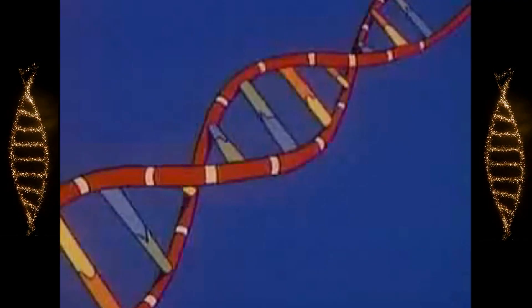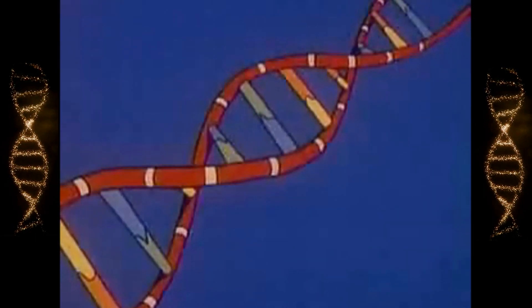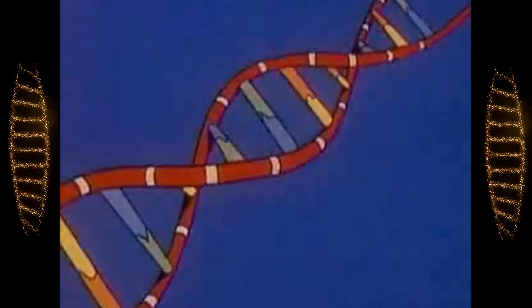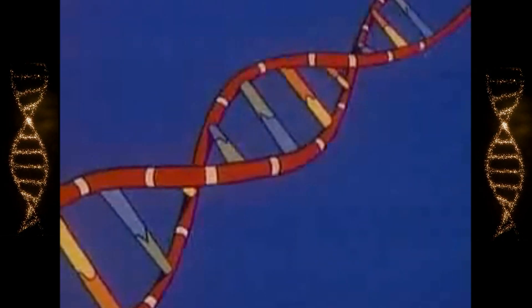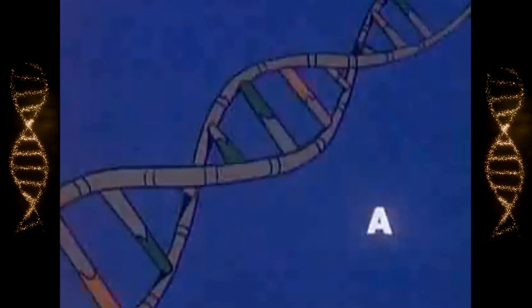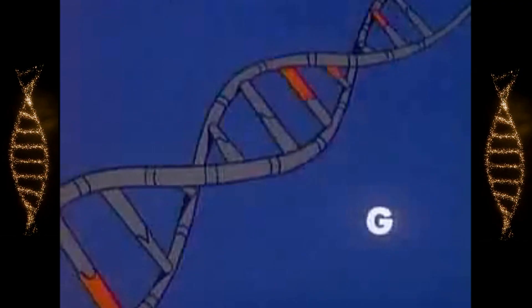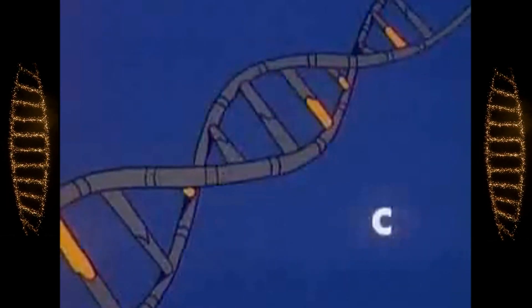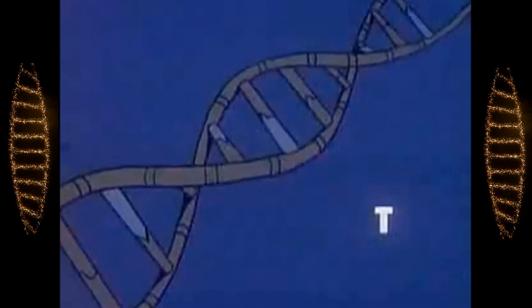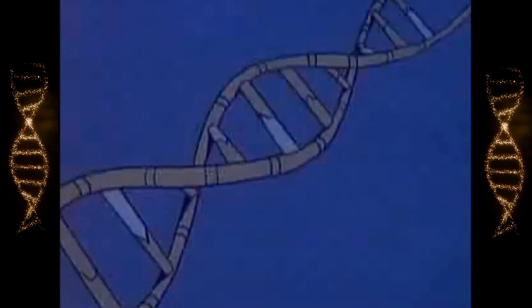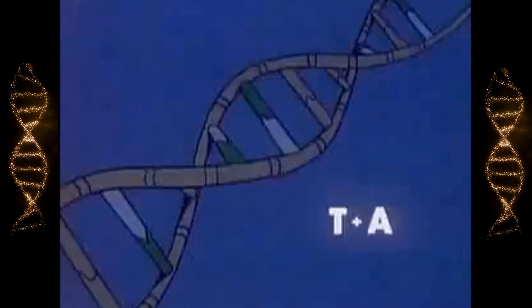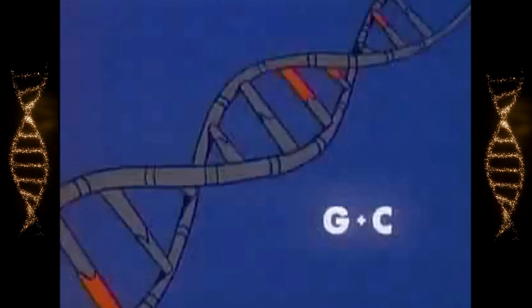The rungs of the ladder are formed of pairs of four chemical bases joined down the center of the ladder. We may refer to them as A, G, C, and T. And you will only find T joined with A and G joined with C.